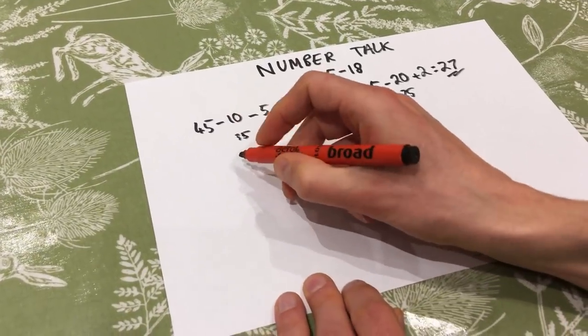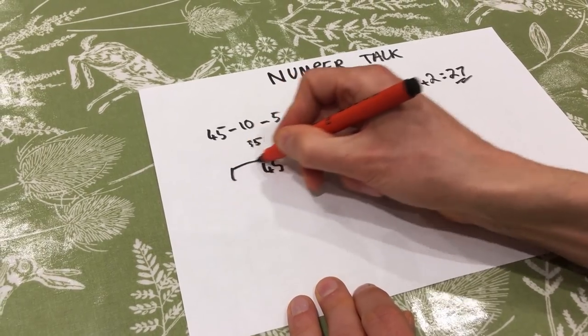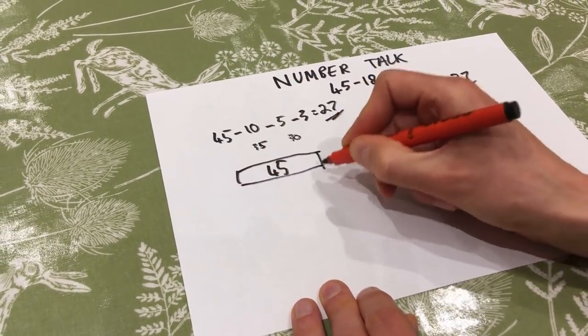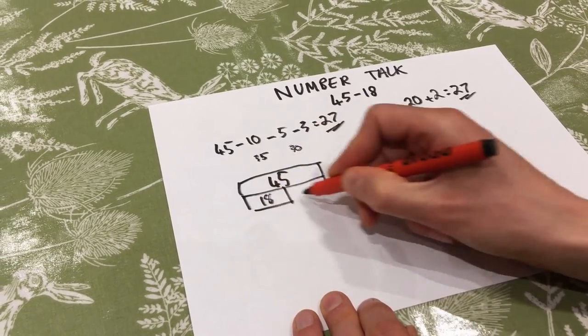But one alternative strategy, if we just really understand, and this is what one child was saying, there's 45 and here's 18. And what we're looking for, if I take away a part of 18, we're just looking for the difference.